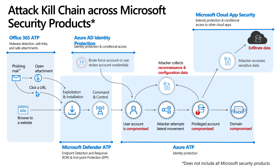For example, what solutions could you put in place to protect against phishing email, the number one threat vector? What solutions could you put in place to mitigate vulnerabilities in the operating system on your clients or applications, and prevent suspicious code from running and installing itself? What identity solutions could you put in place to find suspicious behavior and stop attackers from gaining domain dominance? And what solutions could you put in place to stop and prevent data from being exfiltrated out of the environment?